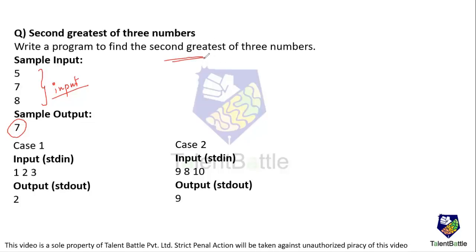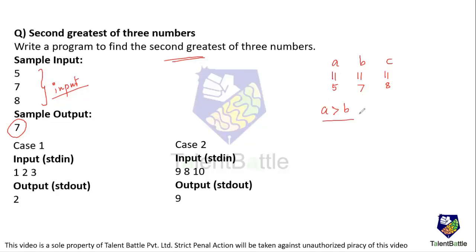Suppose we have three numbers a, b, and c where a equals 5, b equals 7, and c equals 8. A nested if-else logical flow will help solve this problem. First, I check if a is greater than b, and simultaneously with a logical AND, check if a is greater than c.